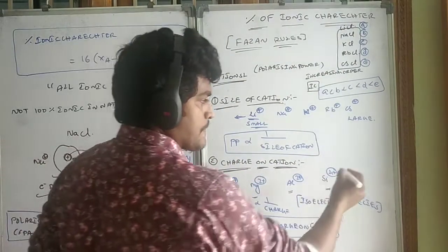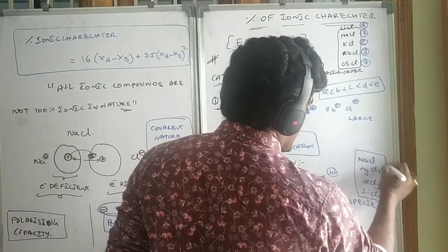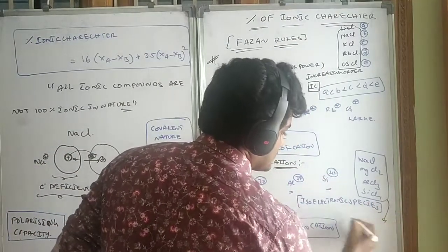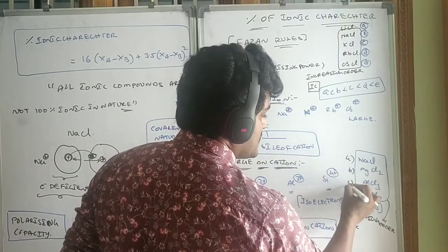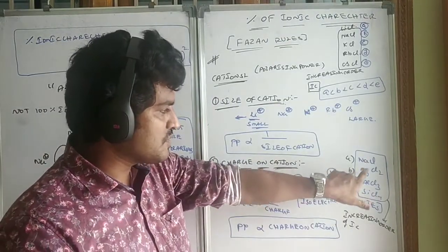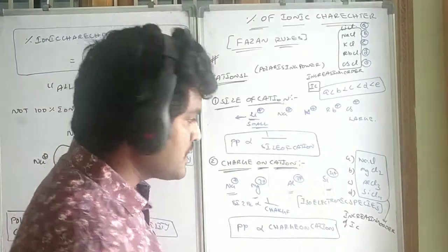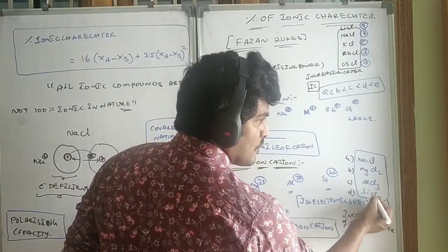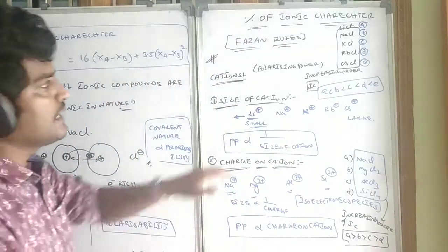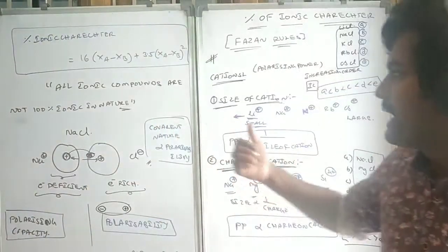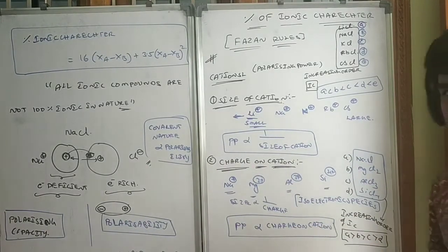Another example with cation charge: NaCl, MgCl₂, AlCl₃, SiCl₄ — arrange in increasing order of ionic character. Sodium has +1 charge, magnesium +2, aluminium +3, silicon +4. As charge increases, polarizing power increases and hence covalent nature increases, so ionic nature decreases. SiCl₄ is the most covalent and least ionic. So the increasing order of ionic character is SiCl₄ < AlCl₃ < MgCl₂ < NaCl. So Fajans rules with respect to cation: polarizing power is inversely proportional to size of cation and directly proportional to charge on cation.